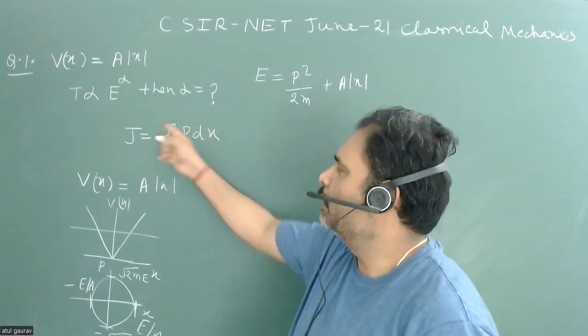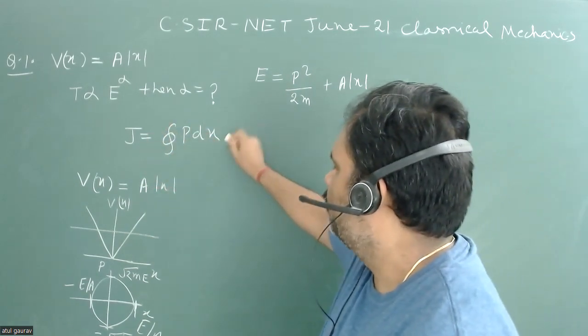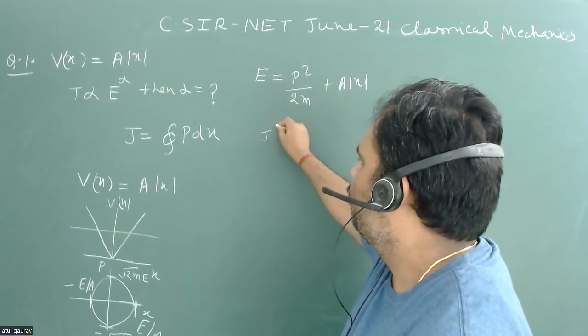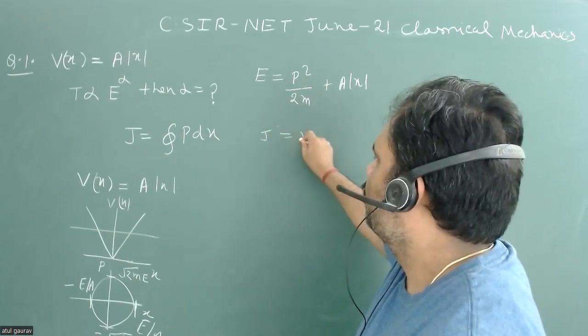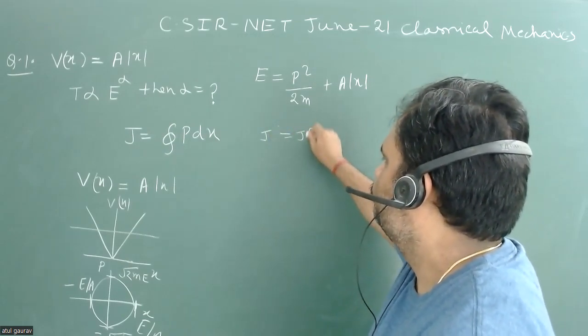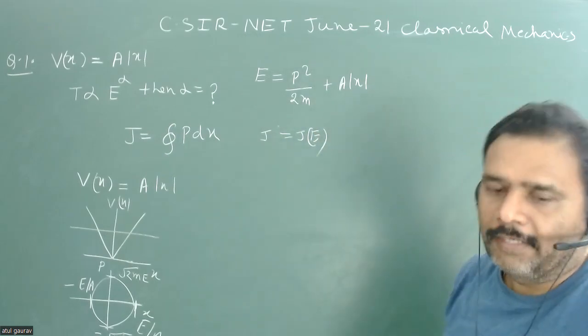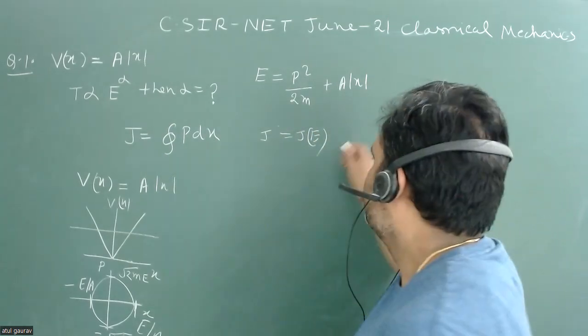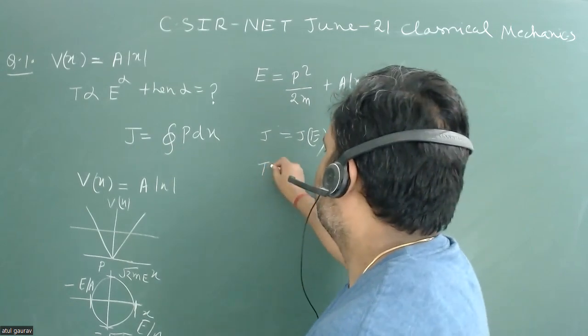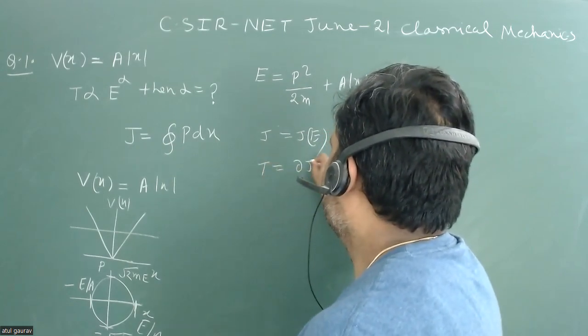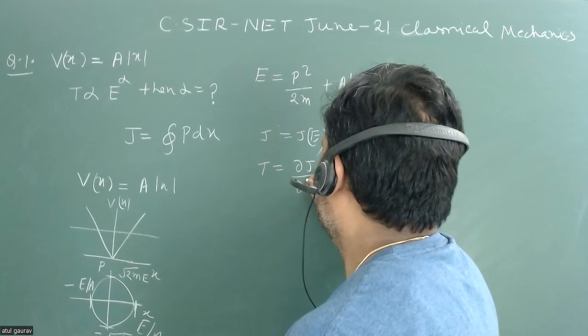Now if we have this particular J and if we calculate this J, then this J will be actually a function of energy. And once we calculate this J as a function of energy, then obviously the time period is given by del J upon del E.